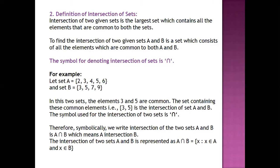The symbol for denoting intersection is ∩. Let's say A is one set and B is another. We will try to find the common elements — three and five are the common elements, so the intersection will be {3, 5}.